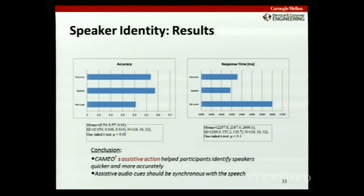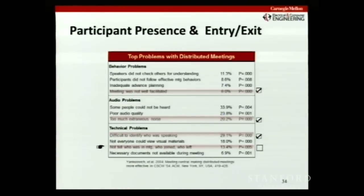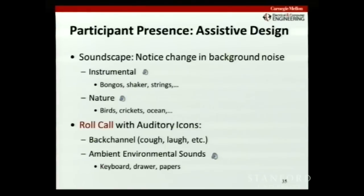We were able to show that Cameo's assistive action — identifying speakers by adding audio cues to the channel — helped others distinguish between speakers. Finally, there's the problem of not being able to tell who was in the meeting, who joined, who left. Our initial idea was to build a soundscape: with five people in a room, there are five instruments playing in the background, so you know people are there even though they're not talking. If a particular instrument drops off, you realize someone dropped off the line.